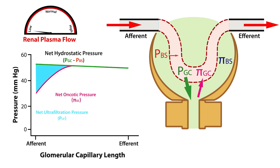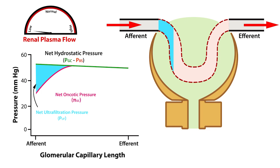At low renal plasma flow, we see that the net ultrafiltration pressure, represented by the blue area, is attenuated and limited to the early part of the glomerular capillary. We also see the net hydrostatic pressure across the glomerular capillary is stable at 50 mmHg, while the net oncotic pressure increases rapidly to where it equals that of the net hydrostatic pressure nearly halfway across the glomerular capillary.